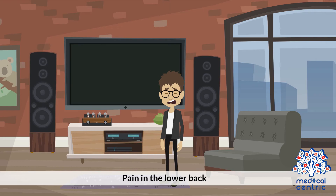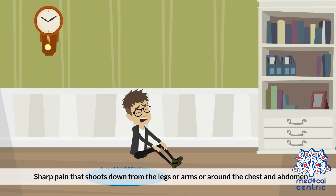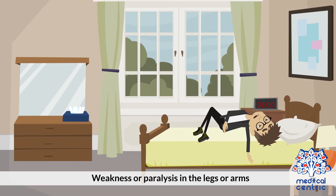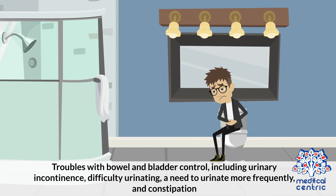Symptoms. Pain in the lower back. Sharp pain that shoots down from the legs or arms or around the chest and abdomen. Weakness or paralysis in the legs or arms. Troubles with bowel and bladder control, including urinary incontinence, difficulty urinating, and a need to urinate more frequently, and constipation.